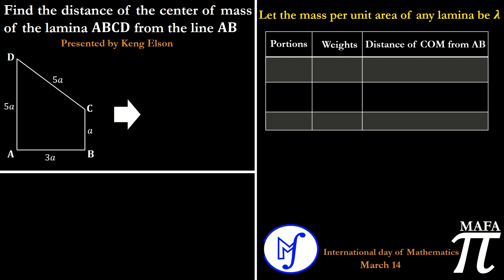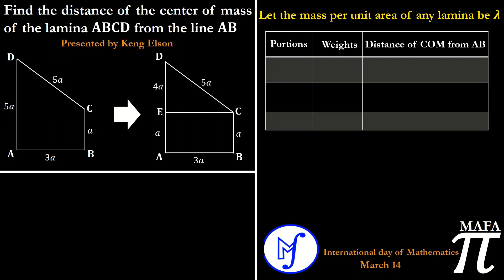Before we begin with the first portion, we are going to divide our laminar into two different portions. This is the original laminar given to us. We construct a point E where we draw line EC to form rectangle ABCE and triangle ECD. The width of the rectangle is a, therefore the height of the triangle is 4a, because the total length from A to D was 5a. So the distance from A to E is a, and from E to D is 5a minus a, which is 4a.